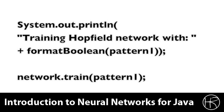We begin by displaying the pattern that is going to be trained. This is Pattern 1. To display the pattern we use the format boolean function. This function was defined earlier in this class. All that the format boolean function does is displays trues as t's and falses as f's. This simply displays the pattern to the console.